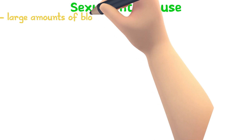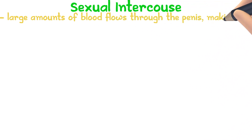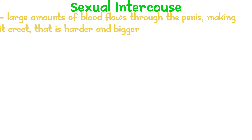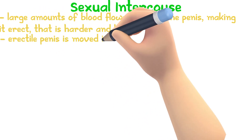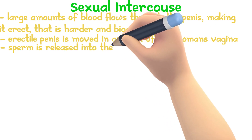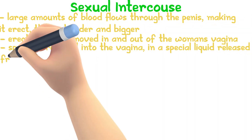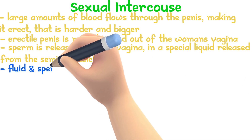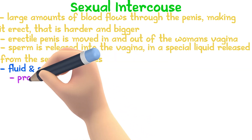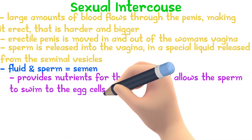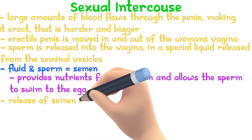During sexual intercourse, large amounts of blood flow through the penis, which becomes erect, i.e. bigger and harder. The erectile penis is then moved in and out of the woman's vagina. Sperm is released into the vagina with a special fluid from the seminal vesicles. The fluid and the sperm together are called semen. Semen provides nutrients for the sperm and allows it to swim to the egg. The release of semen is called ejaculation.